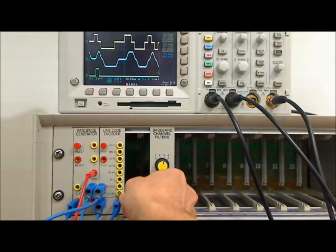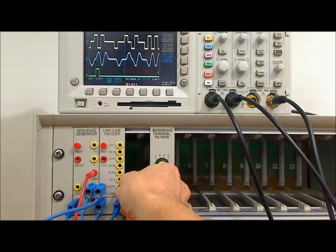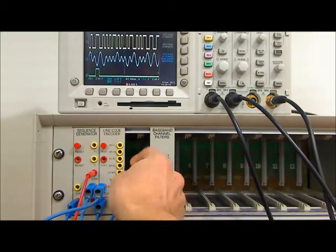As you can see, the bandwidth of the baseband channel filter is such that the signals are significantly attenuated.